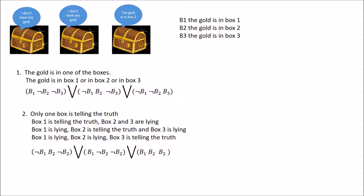Looking closely at each statement: the first says not B1, B2, and not B2 — it's in box two and not in box two, which is illogical, so we strike it out. The second statement is fine except it repeats itself, so we simplify to B1 and not B2. The third says it's in box one and box two and box two — it can't be in two boxes at once, so that's also false. The only statement that makes sense is the middle one.